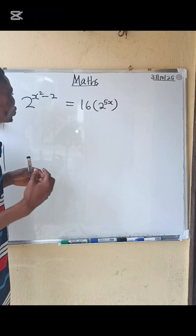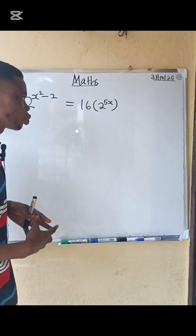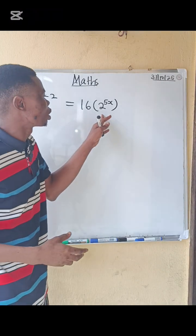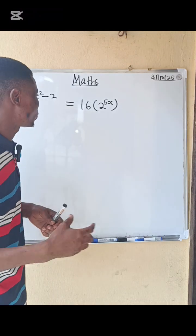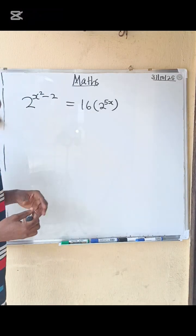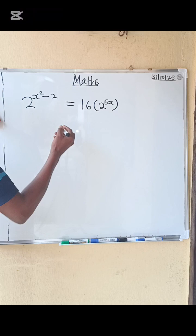2 exponential x squared minus 2 equals to 16 multiplied by 2 exponential 5x. We are asked to find the values of x. What do we do? Solution.